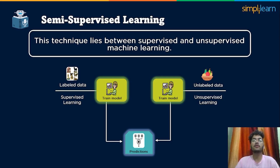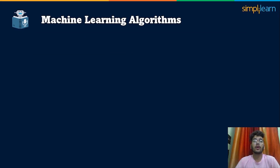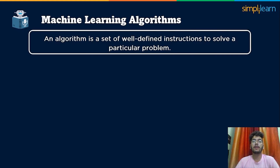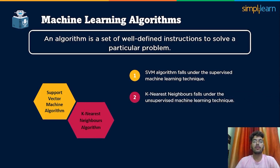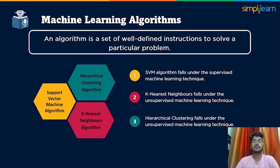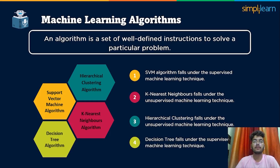In computer programming terms, an algorithm is a set of well-defined instructions to solve a particular problem — it takes a bunch of inputs and delivers the ideal result. In this modern time, there are lots of machine learning algorithms used today. The most widely used ones include: the Support Vector Machine algorithm, also known as SVM, which falls under supervised machine learning; the K-Nearest Neighbor algorithm, which falls under unsupervised machine learning; the Hierarchical Clustering algorithm, also unsupervised; and the Decision Tree algorithm, the most widely used, which falls under supervised machine learning.